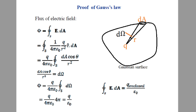We consider an elementary area dA on the surface, at a distance R from the point charge. The flux passing through the closed surface is φ = ∮ E · dA. The electric field produced by charge Q at the elementary area is E = (1 / 4πε₀) · (Q / R²) · R̂, where R̂ is the unit vector away from the charge. Since Q and 4πε₀ are constants, they can be taken outside the integral.